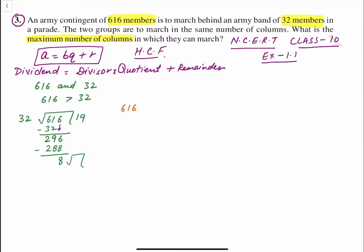616 which is our dividend is equal to divisor which is 32 multiply by quotient which is 19 plus remainder 8.